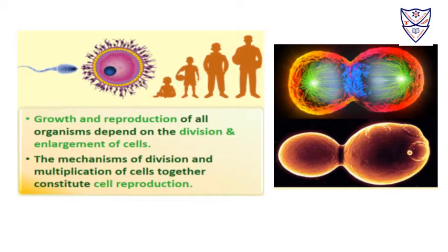Cell growth is the increase in cytoplasmic volume, and it is a continuous process. Whereas DNA synthesis will occur only at a specific stage. The duration of the cell cycle will vary in each organism and each cell type. The duration of a typical eukaryotic cell cycle is generally 24 hours in the human cell, whereas in yeast it is about 30 minutes.